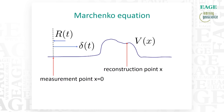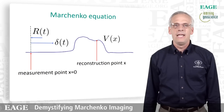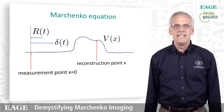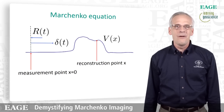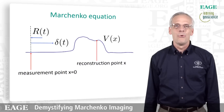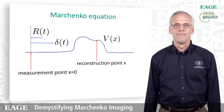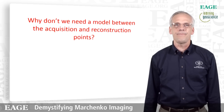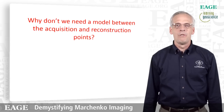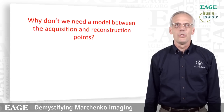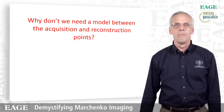But this method does raise an interesting question. How is it possible that we can reconstruct our unknown model at a location x when we have recorded data at x equals zero, without knowing the model between our measurement point and our reconstruction point? This is the main question I want to address in this presentation: why don't we need a model between the acquisition and the reconstruction points?